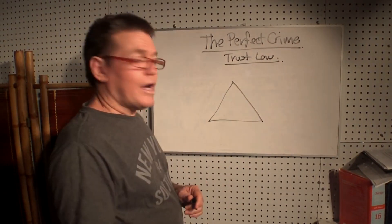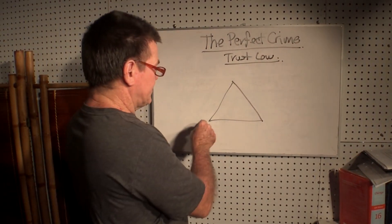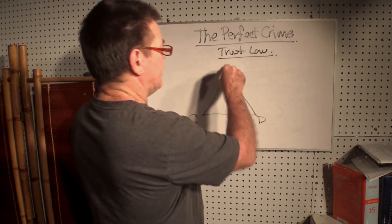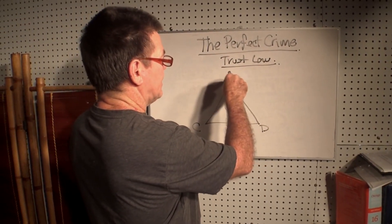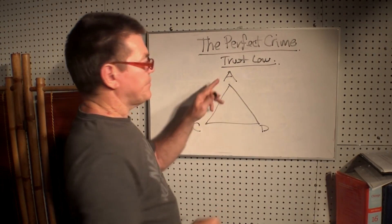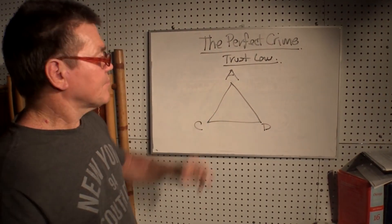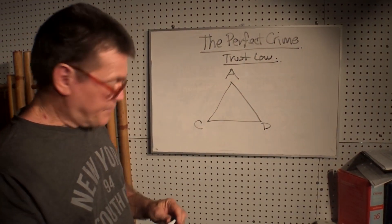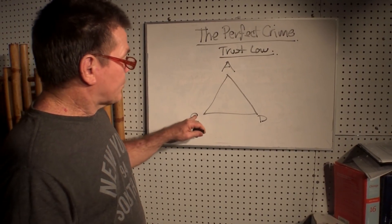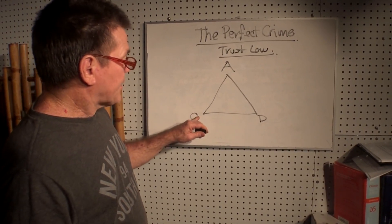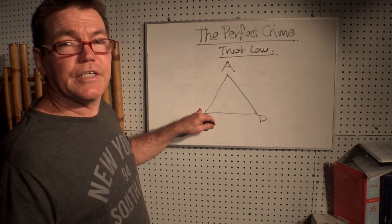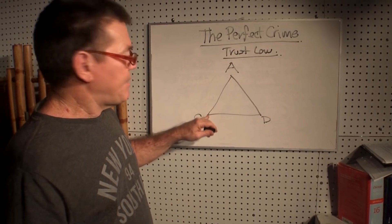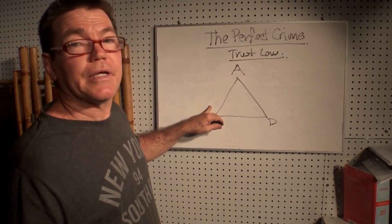Trust law has a creditor, a debtor, and an administrator — three elements. The creditor gives, or grants, the dominion. He may own some property, and if he's the sovereign, then he will own the mineral and energy wealth of the land that we were born onto.